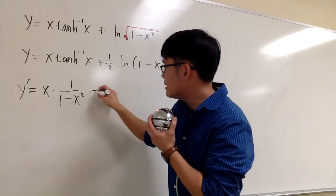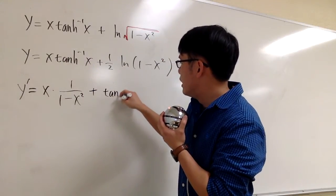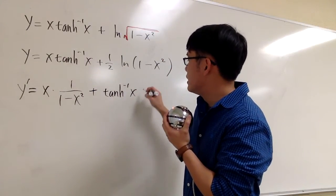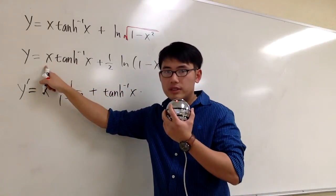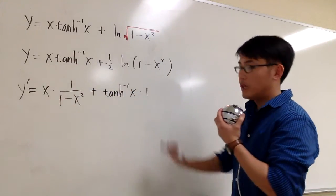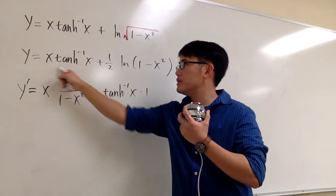And we add the second function, we keep it, inverse tangent x times the derivative of first, which is just 1. So we're done with the first part, this part right here.